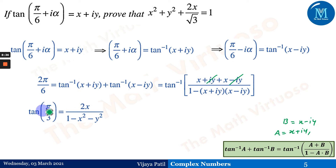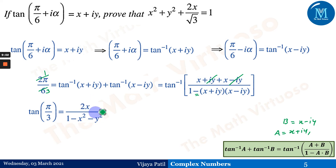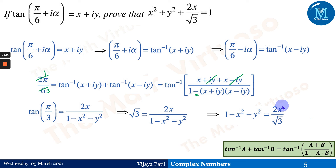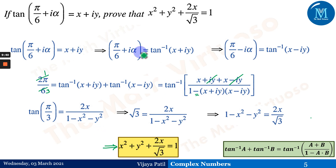The product (x+iy)(x-iy) = x² + y², so the denominator becomes 1 - x² - y². This gives tan(π/3) = 2x/(1 - x² - y²). Since tan(π/3) = √3, we have √3·(1 - x² - y²) = 2x, which rearranges to x² + y² + 2x/√3 = 1, proving the identity.